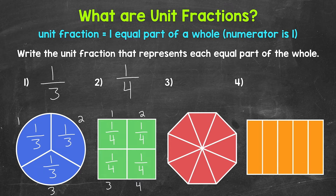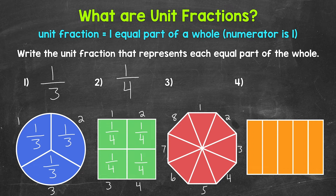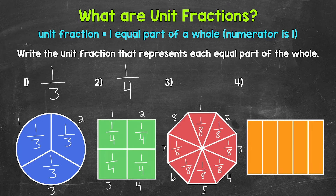Let's move on to number three. We'll start by seeing how many equal parts the whole has been divided into — one, two, three, four, five, six, seven, eight equal parts. Each equal part is one out of eight total equal parts, so our unit fraction here is one-eighth. Each of the eight equal parts is one-eighth of the whole. So one-eighth is the unit fraction that represents each equal part of the whole.